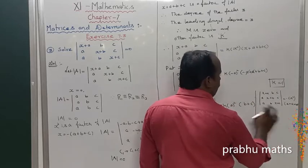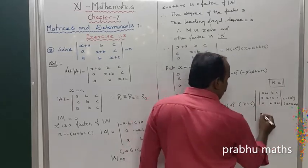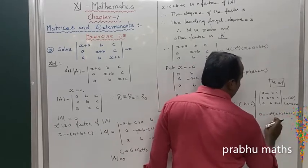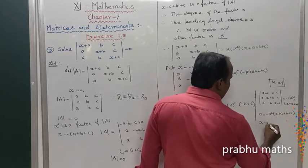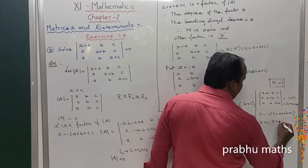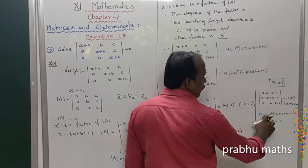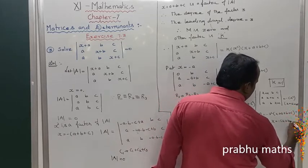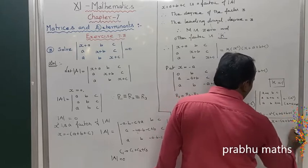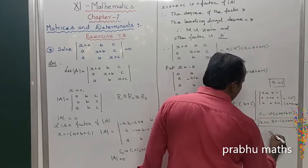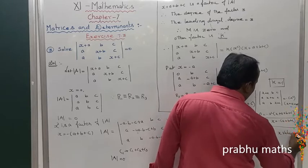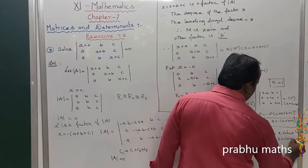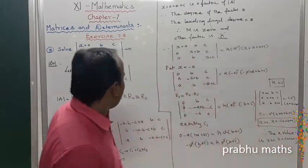Since the determinant is given equal to 0, we have: minus x squared times (x plus a plus b plus c) equals 0. Therefore x equals 0, or x equals minus (a plus b plus c). These are the solutions.